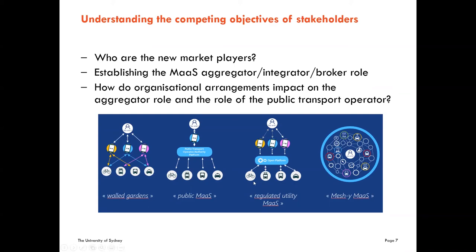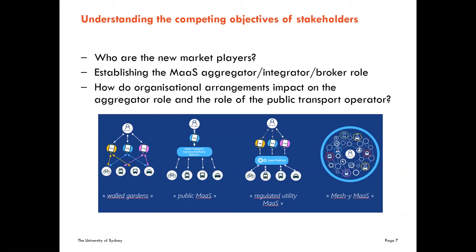In the regulated utility MAS, public transport operators will have little change to their business model, provided that the third-party platform operator behaves like the government — which we believe is likely, as the government will define the rules of engagement. Meshi-MAS will create considerable change to business models, allowing those self-executing contracts between the operator and users. Because the aggregator is absent from this form, Meshi-MAS along with the other three will require some way of allocating revenue as well as some way of introducing subsidy.